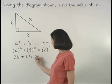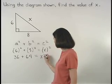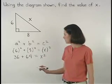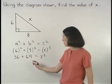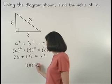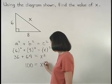So we have 36 plus 64 equals x squared. 36 plus 64 is 100, so we have 100 equals x squared.